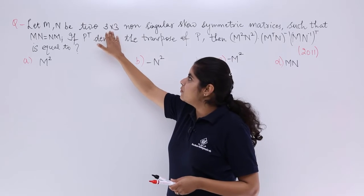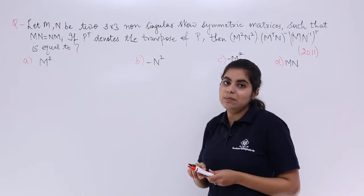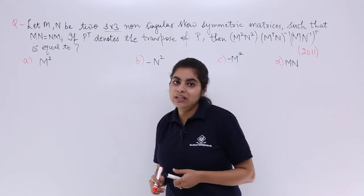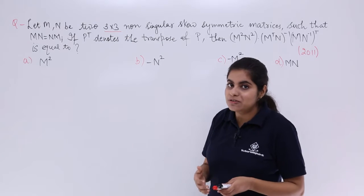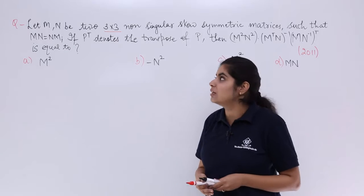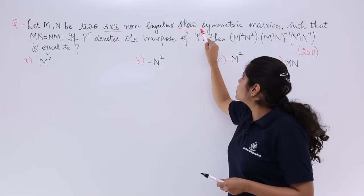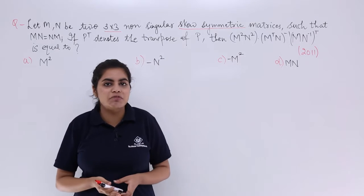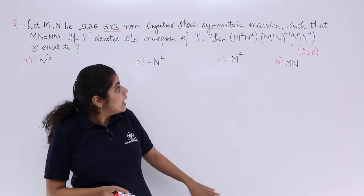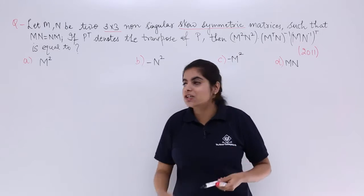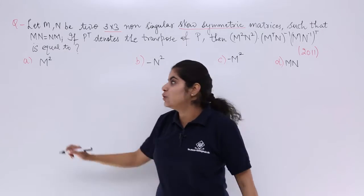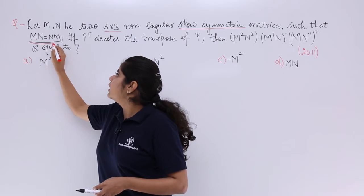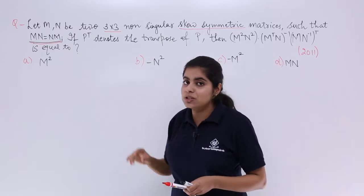The question is: let M and N be two 3×3 non-singular matrices. M and N both are 3×3 matrices. These are skew-symmetric matrices. Skew-symmetric means M transpose is equal to minus M, and N transpose is equal to minus N. The condition given is MN equals NM.